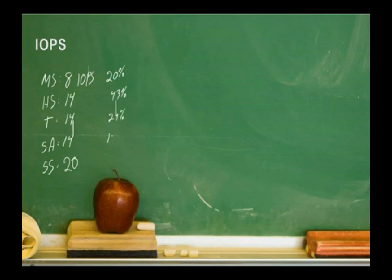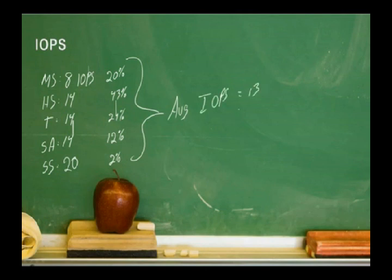We break this down: about 20% of our users are middle school, 43% are high school, 24% are teachers, 12% are school administrators, and 2% are support staff. We calculate all this out and get an average IOPS of thirteen. From the previous slide, we figured out the total functional IOPS is 720. We divide that by our average of thirteen, and we know we're going to be able to get about 55 CCUs, 55 concurrent virtual desktops on each of our hypervisor servers.